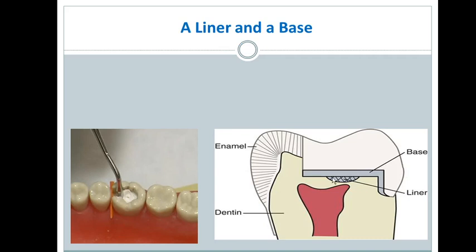Then we put the base — zinc oxide eugenol — on top of the calcium hydroxide. It is applied with a condenser; you can see here the operator is spreading the liner and the base with a condenser.